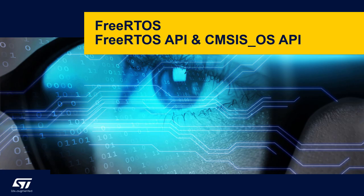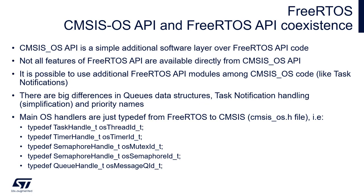Mixing FreeRTOS API and CMSIS-OS API: CMSIS-OS API is a simple additional software layer over the FreeRTOS API code. Not all features of FreeRTOS API are available directly from CMSIS-OS API, so it is sometimes important to use the full FreeRTOS API features — such as task notifications or event groups — alongside CMSIS-OS code. There are notable differences in queue data structures, task notification handling, and priority names, so take care when mixing the two APIs.